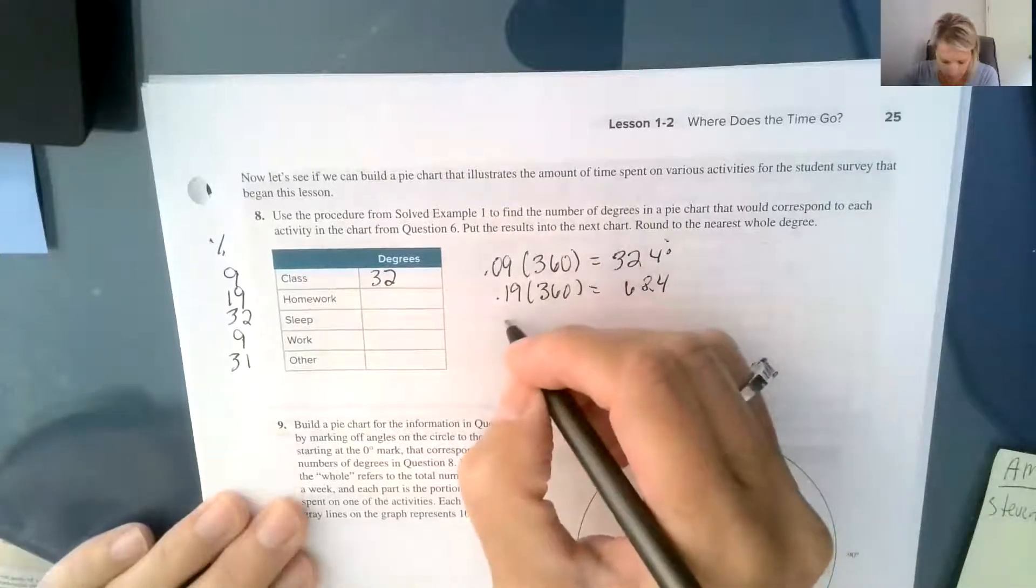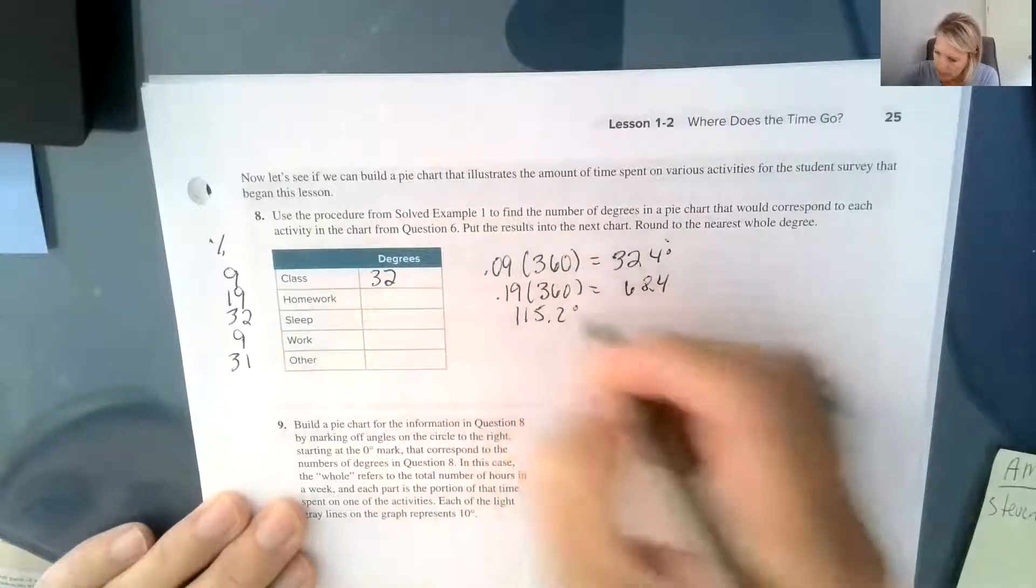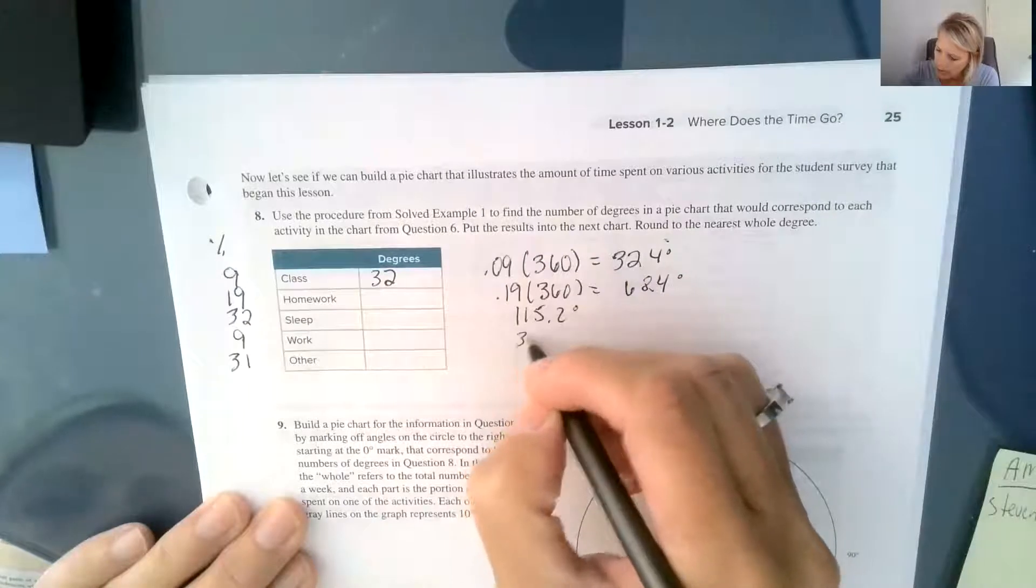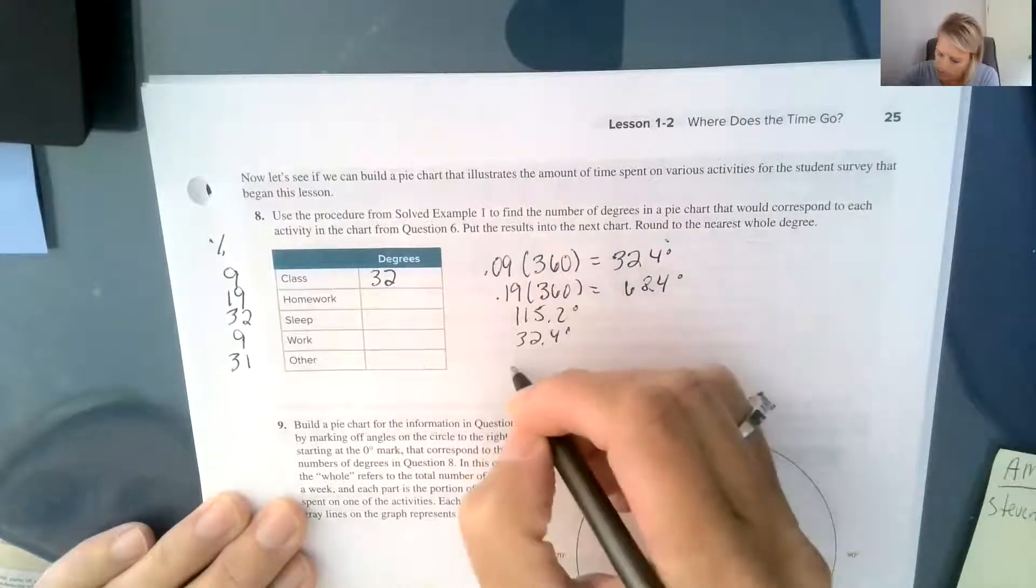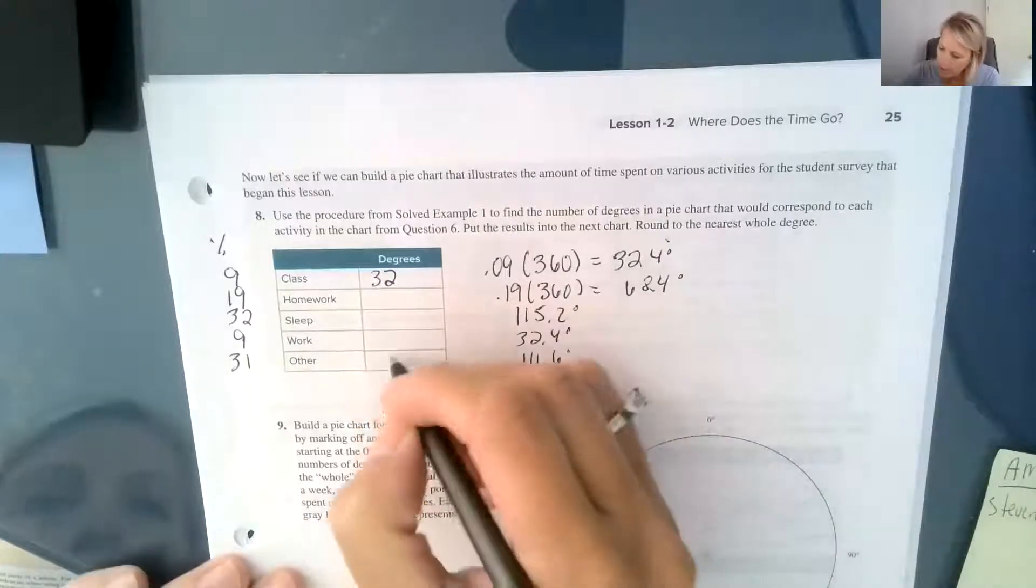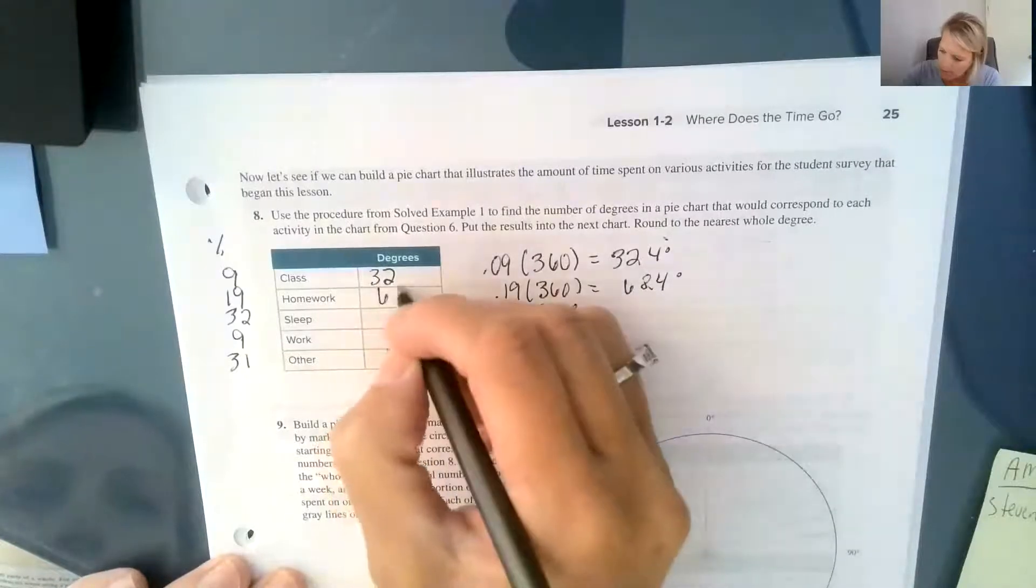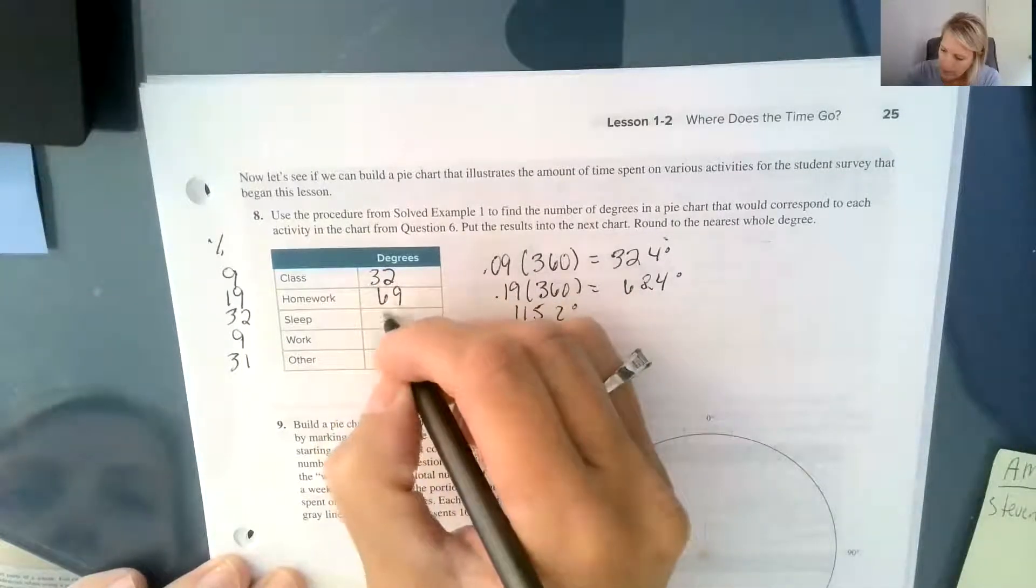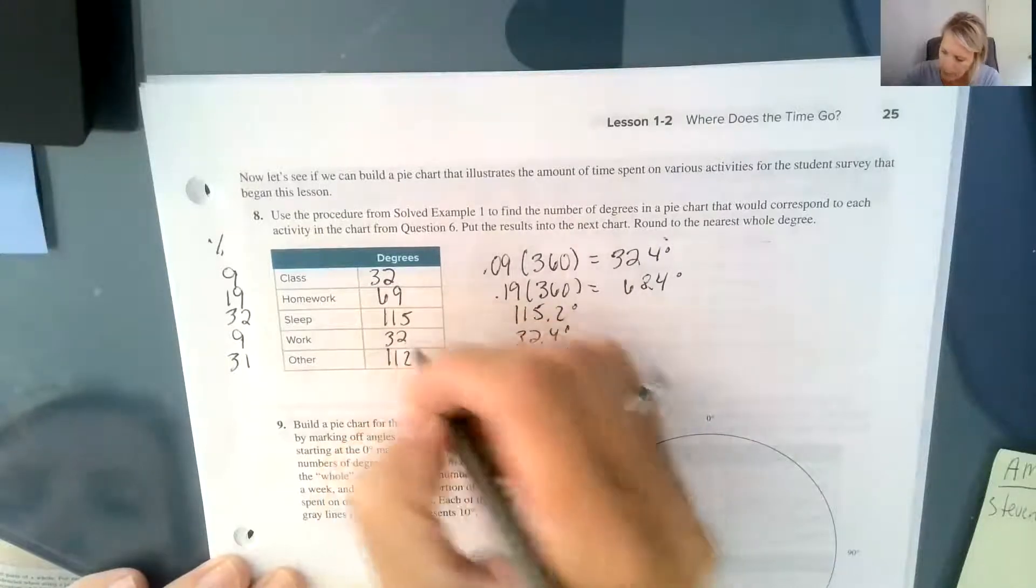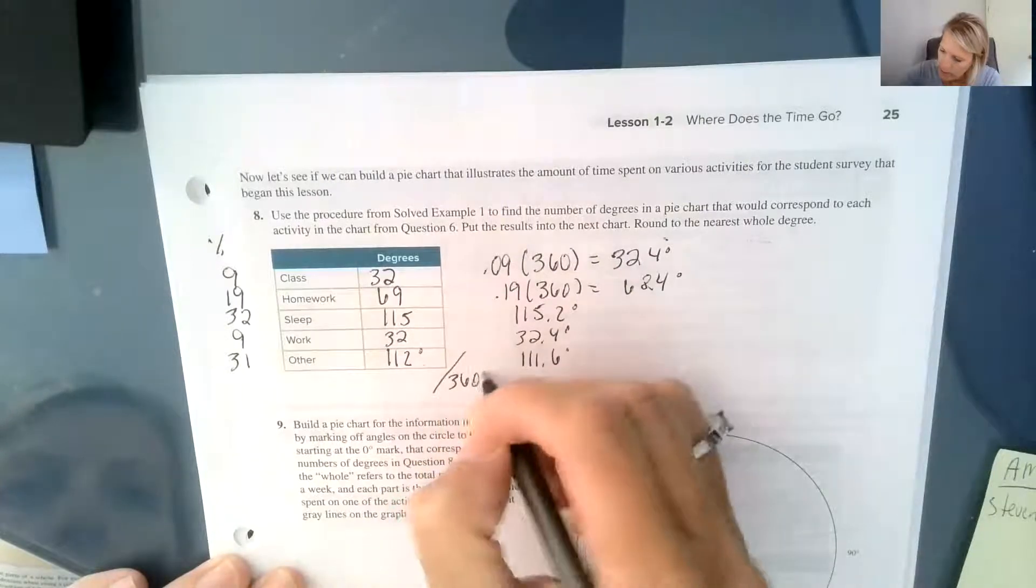And then we have, the next one comes out to be 115.2 degrees. And then we have another 32.4, and then we have 111.6. So when we round these, we kind of have to round them. So I ended up rounding this one up to 69. This one did 115, and this one again to 32, so that they total 360 degrees.